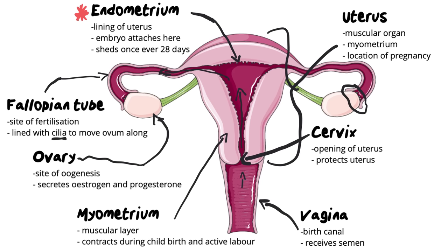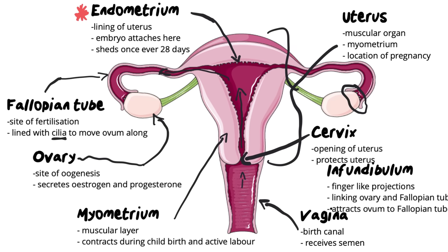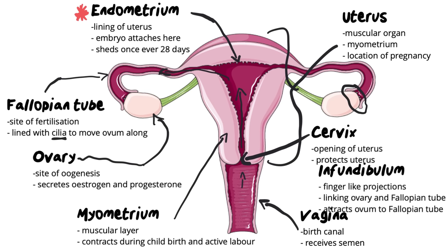The last structure to note: near the ovary you'll see little finger-like pieces sitting around it. The ovary is not actually touching the fallopian tube — there is a space between the two. When you ovulate, the egg travels through that open space and must land into the fallopian tube. To help that process, those little finger-like structures grow out of the fallopian tube to grab hold of the ovum. They are called the infundibulum. The purpose of the infundibulum is to link the ovary to the fallopian tube and attract the ovum toward it so that fertilization can take place.